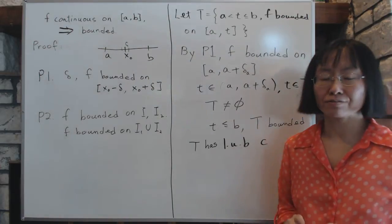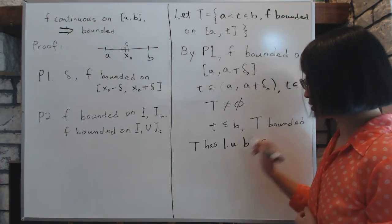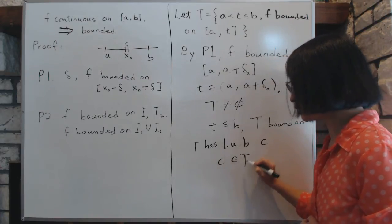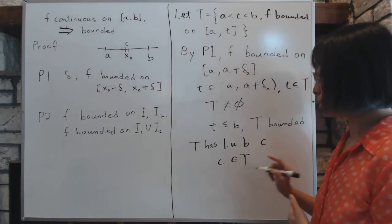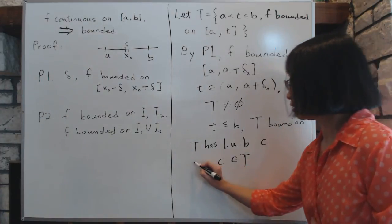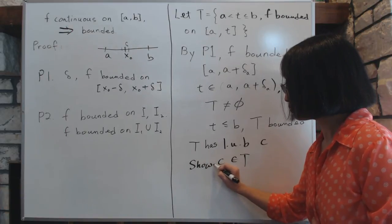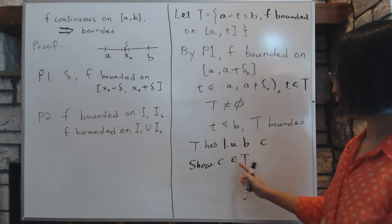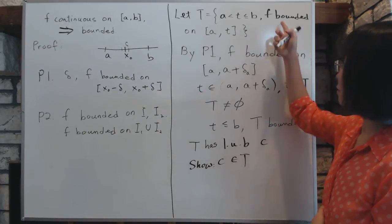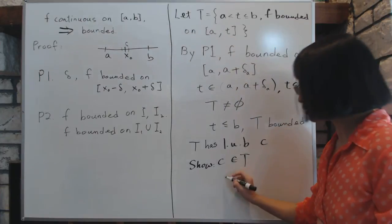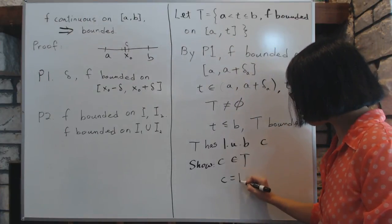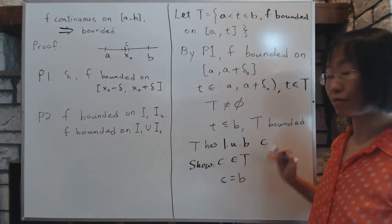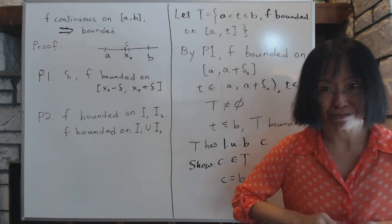Now, in the next part of this video, we will show, the first thing is that c belongs to T. Just because c is the least upper bound, sometimes it doesn't mean it has to belong there. But in this case, c does indeed belong to it. So first thing we will show is that c belongs to T, which is another way of saying that f is bounded going from a to c. And the second thing we will show is that c equals to b, which will conclude our proof because that shows that f is bounded going from a to b.